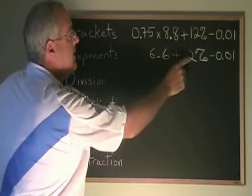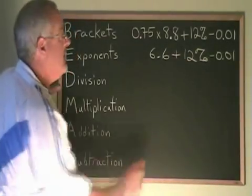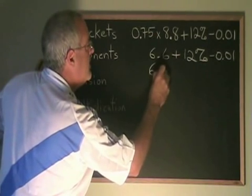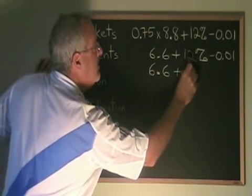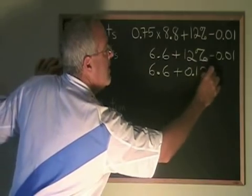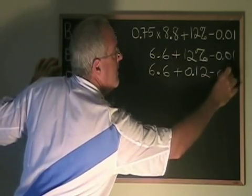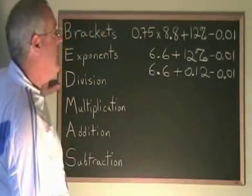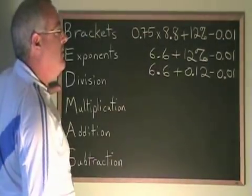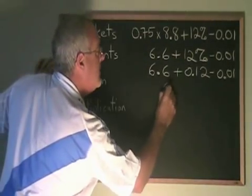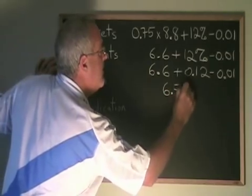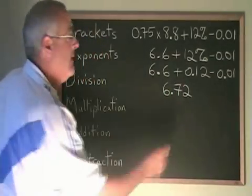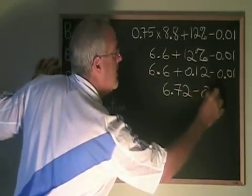In order to do this, I'm going to convert my percentage into a decimal. So it becomes 6.6 plus 0.12 minus 0.01. 6.6 plus 0.12 is equal to 6.72. And I copied down the rest of the problem, minus 0.01.